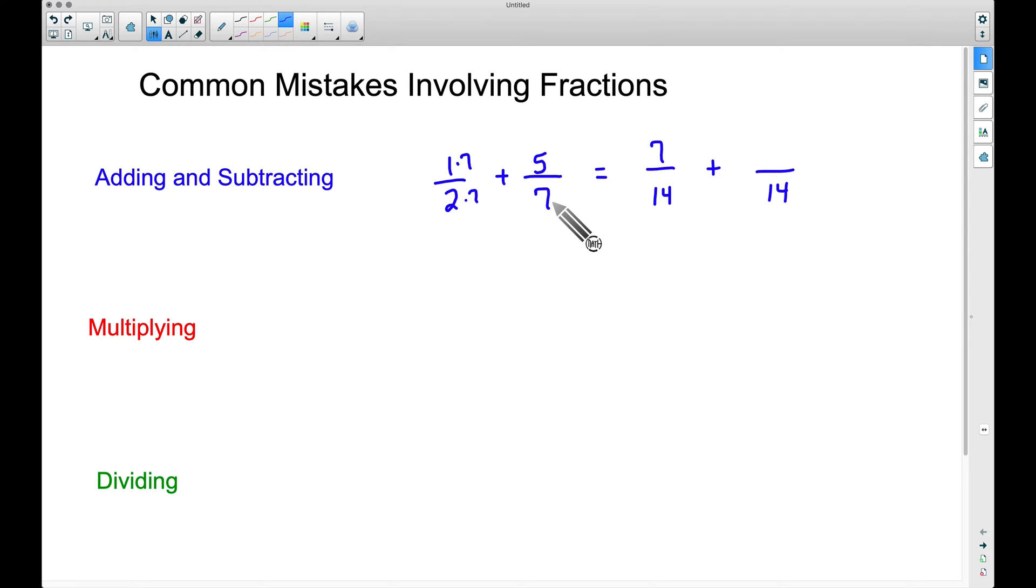Now if we look at the next denominator, the 7, if we multiply it by 2 we get 14, so let's take 5 times 2 and we get 10. 10 over 14 is the exact same thing as 5/7. But now what we have done is we have found common denominators, and the way that we add or subtract fractions once we find common denominators, let's take our two numerators here, the 7 and the 10. Since we are adding those, we will get 17 and our denominator remains the same, 17 over 14. This is the correct way to add fractions.